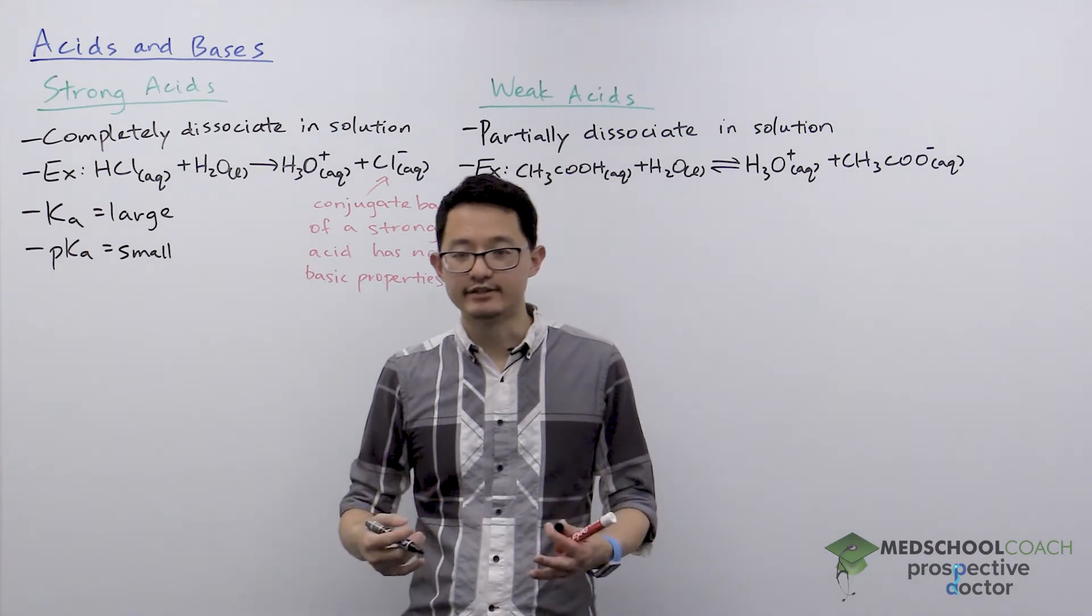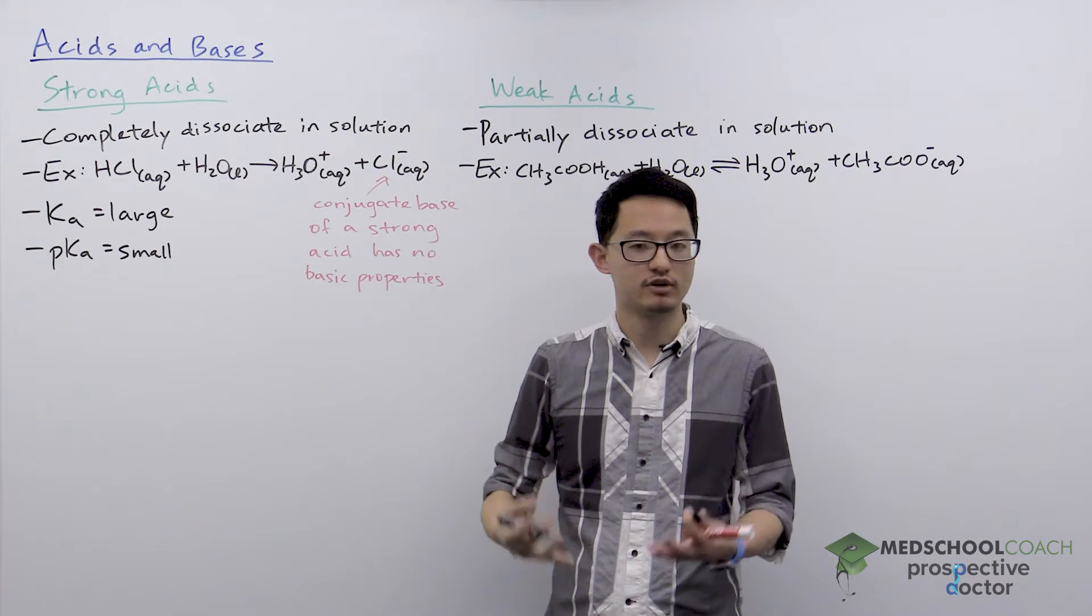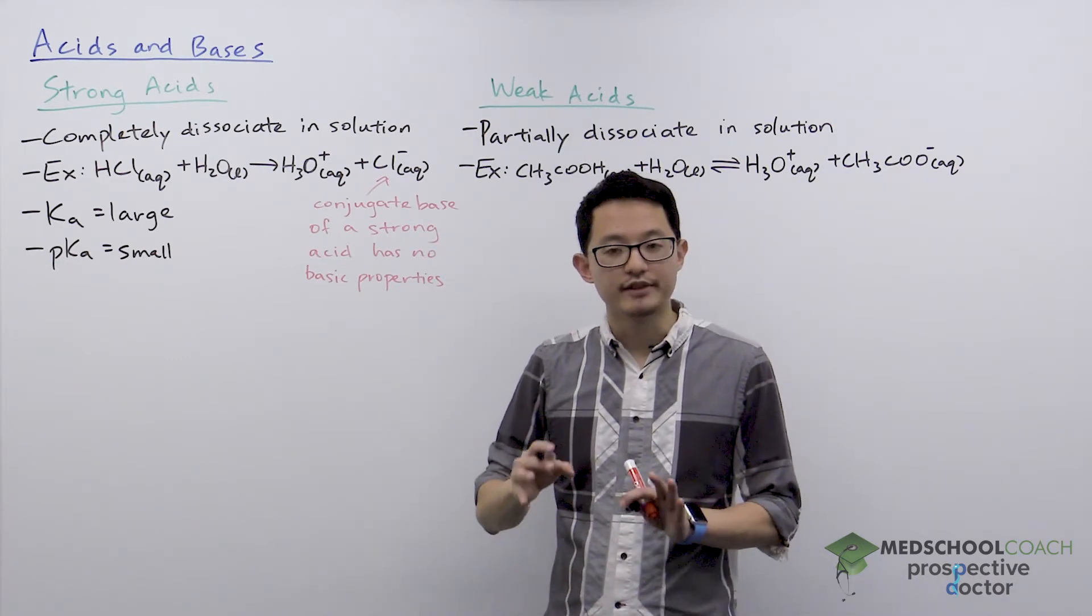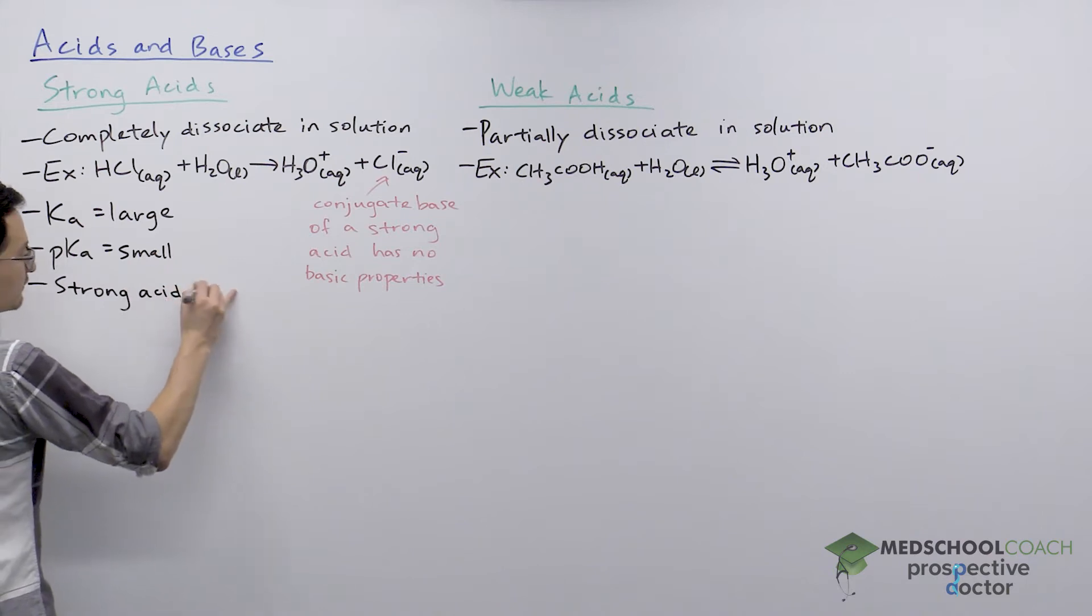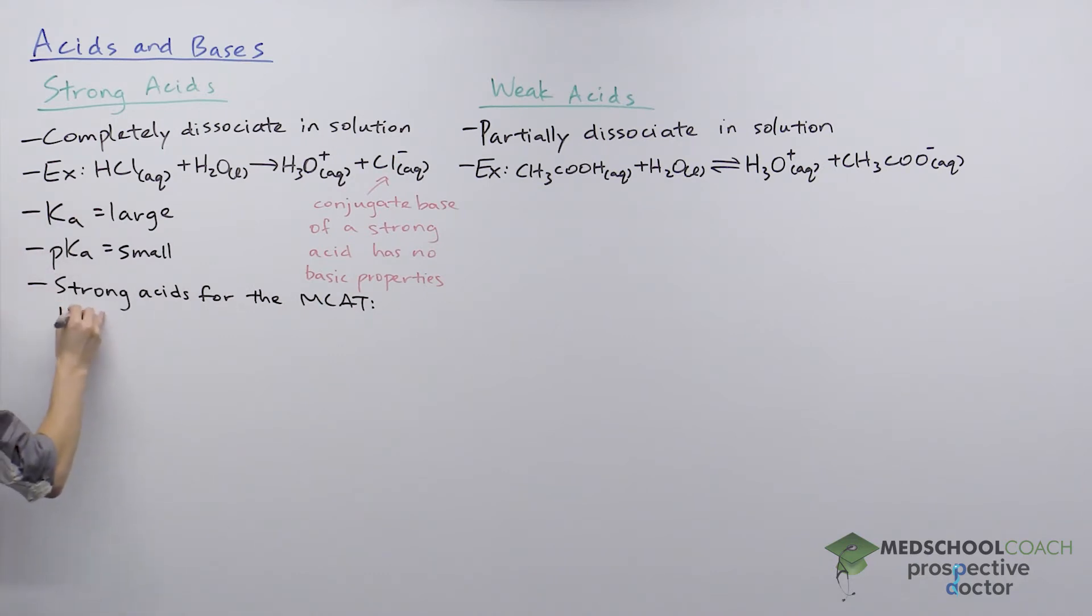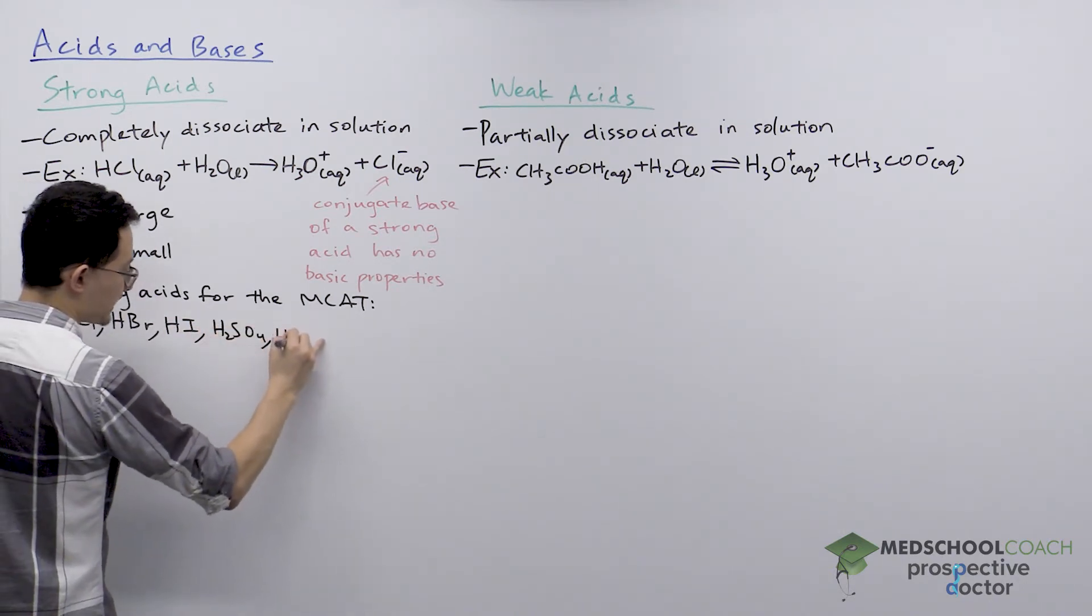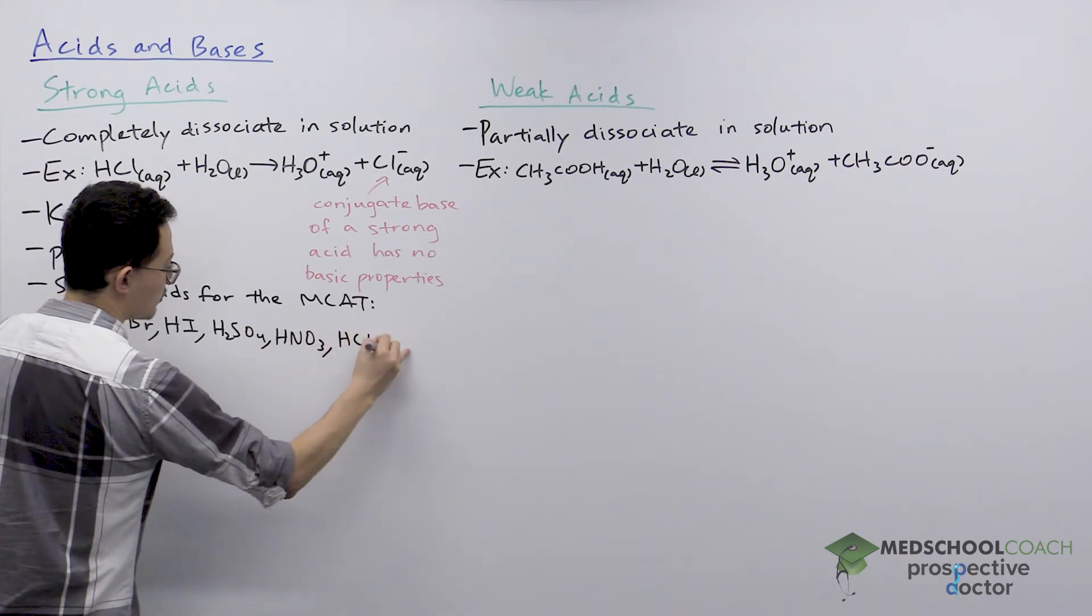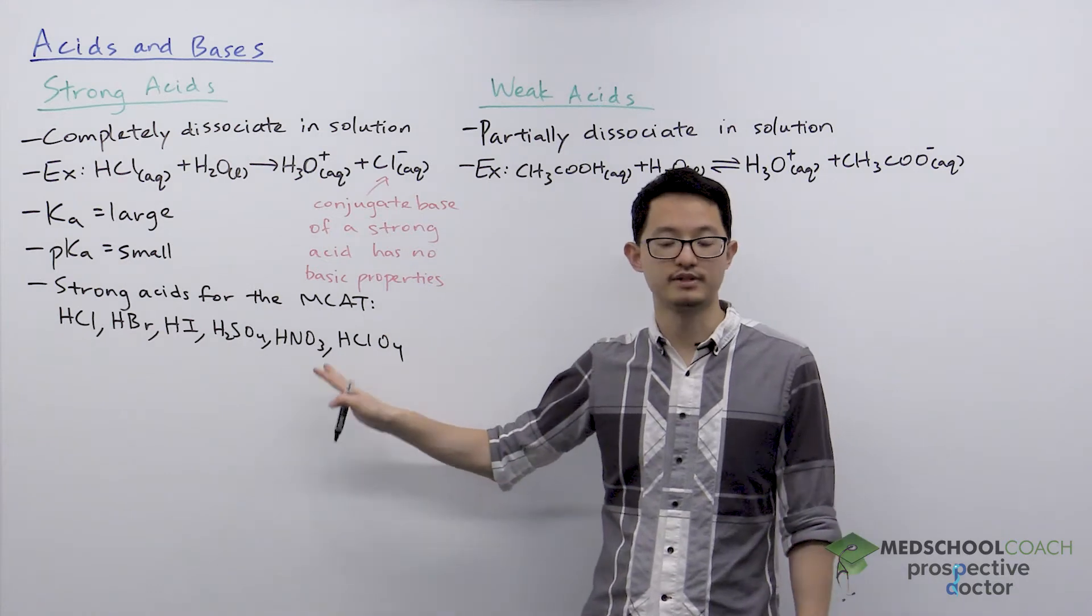Finally, the last thing you need to know is that HCl is not the only strong acid. There are many strong acids out there, and for the MCAT, there are a few important ones you want to have memorized. So here we're going to have the strong acids for the MCAT. So you have hydrochloric acid, hydrobromic acid, hydroiodic acid, sulfuric acid, nitric acid, and perchloric acid. So these six molecules you want to have memorized for the MCAT.